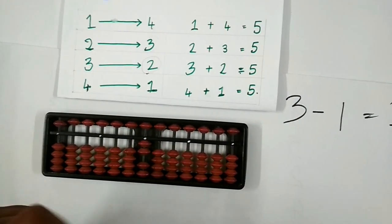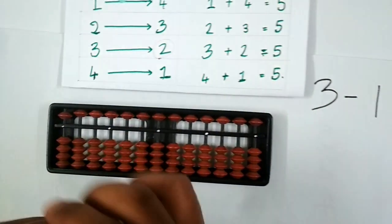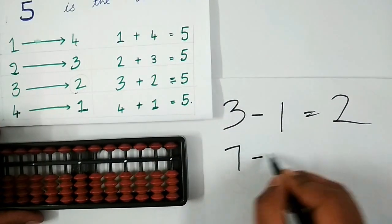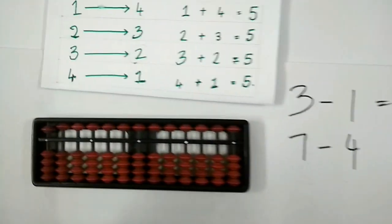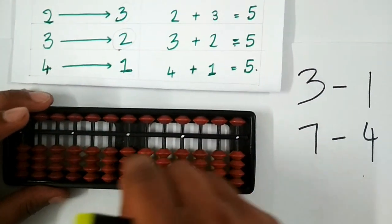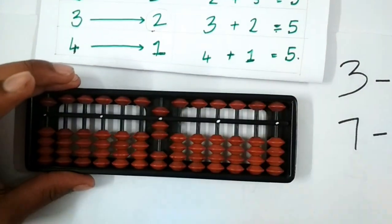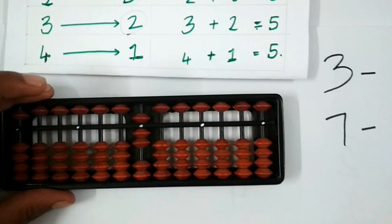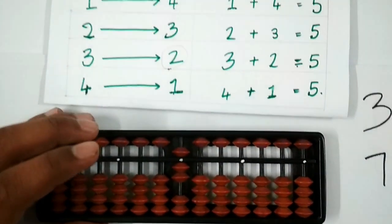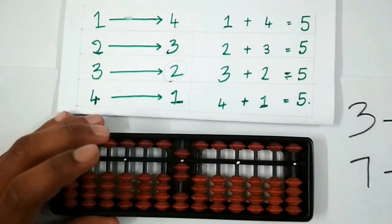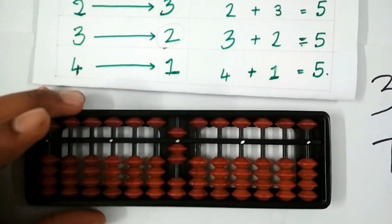Let us take another example. Let us try to subtract 7 minus 4. The first step is to place 7 on the abacus. Now we have to subtract 4 from 7, so first we check whether we have enough beads at the lower end to subtract.